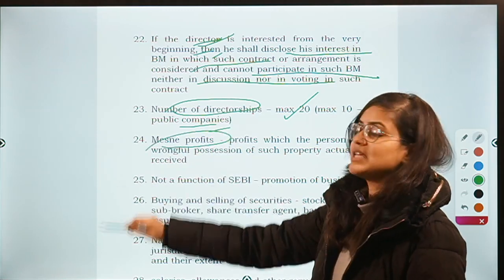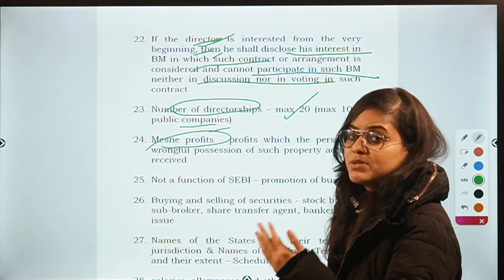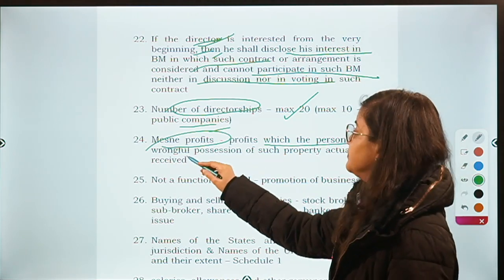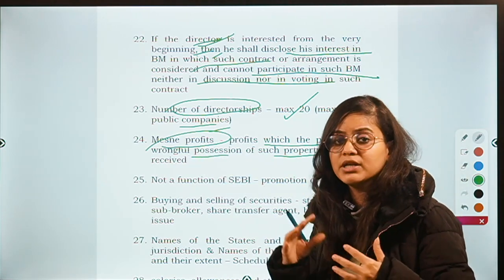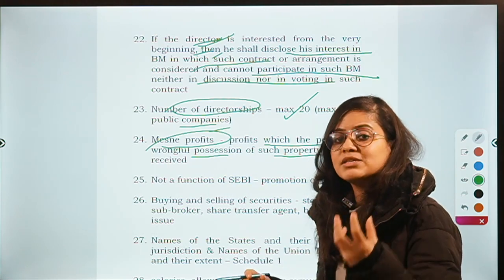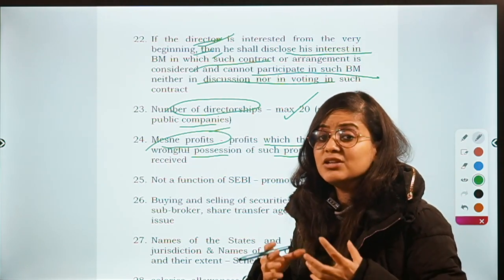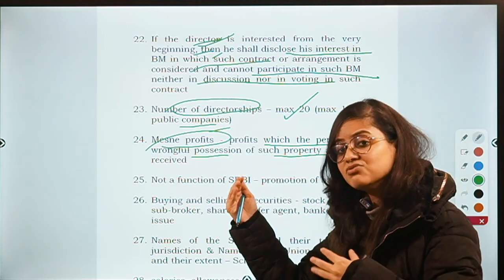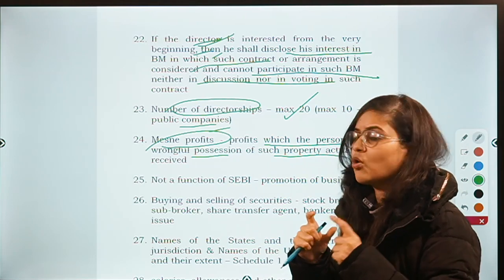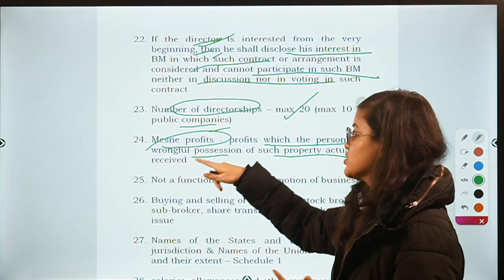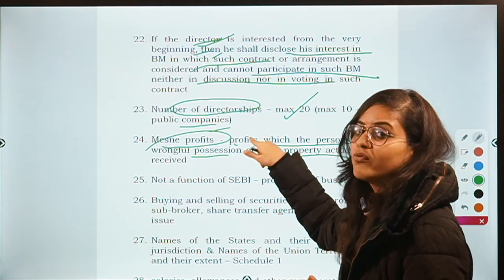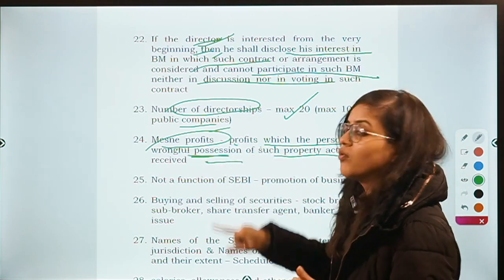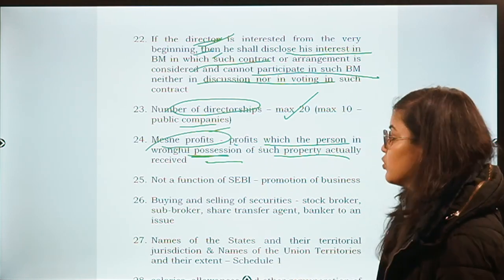What are 'mesne profits' as per the CPC — the Civil Procedure Code? Mesne profits are profits which the person in wrongful possession of such property receives. A person in wrongful possession of a property — the profits that person receives from that property are called mesne profits. The options included 'wrongful profit' or 'wrongful gain' to confuse — the profit is not wrongful, the possession is wrongful.